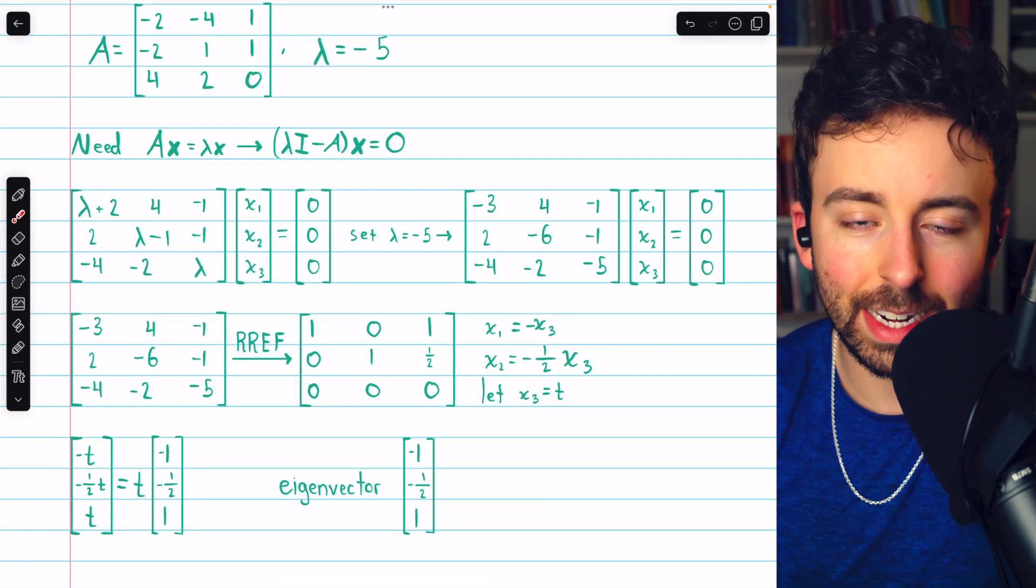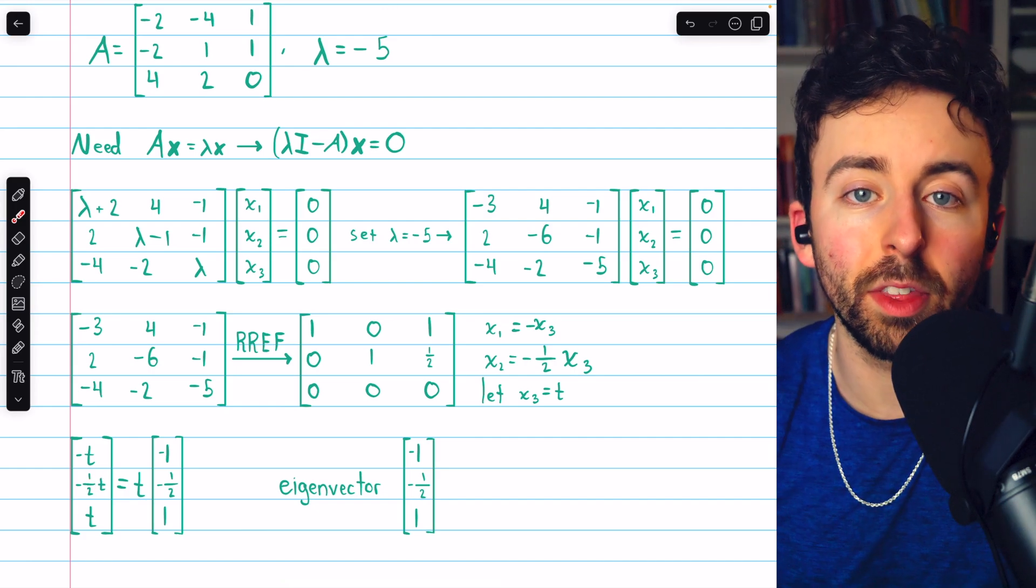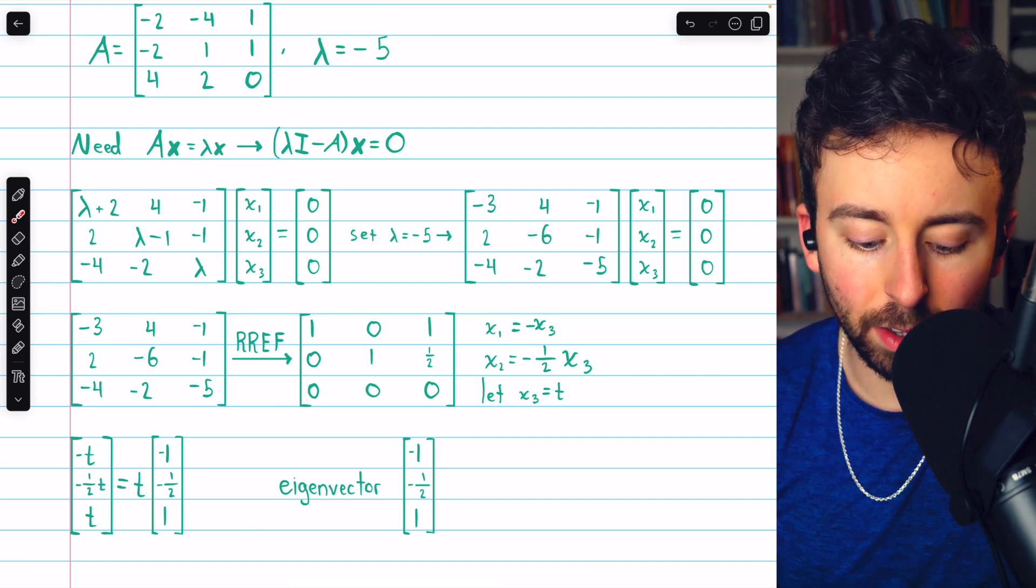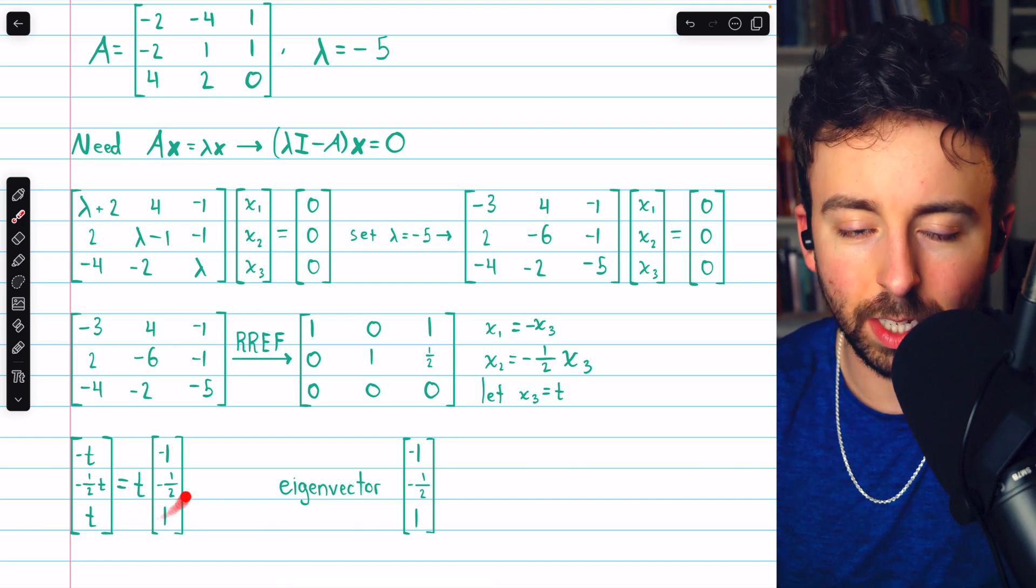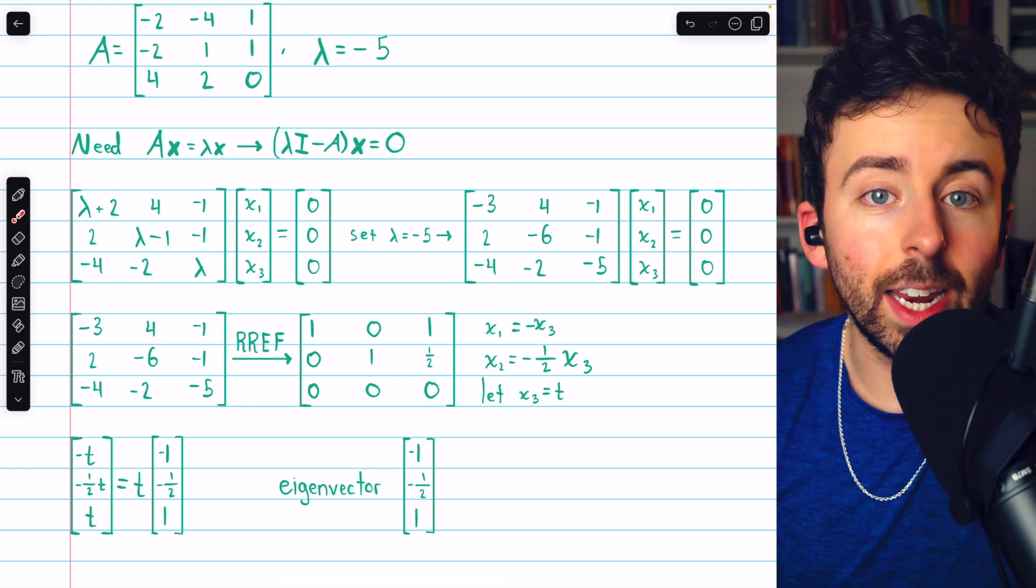So then any vector of this form, where the first entry is the negative of the third, and the second entry is negative half times the third, any vector like that, which we could write like this, taking the parameter t out, is going to be an eigenvector, provided it's non-zero.